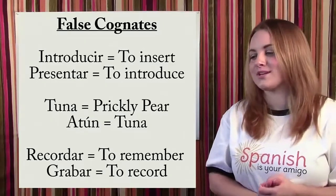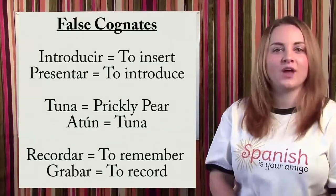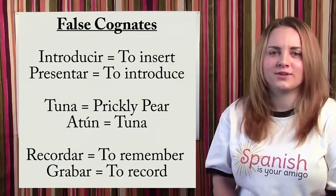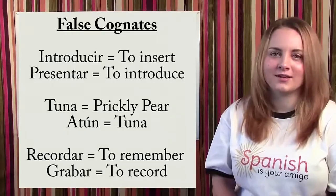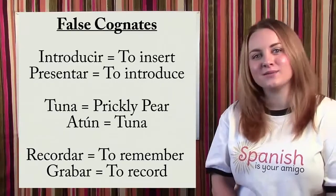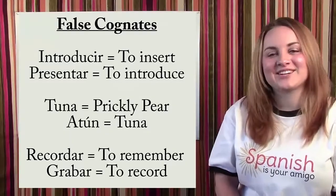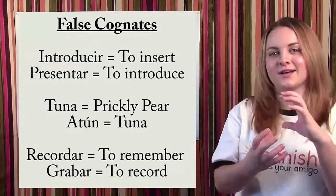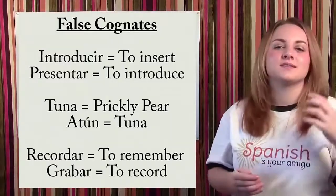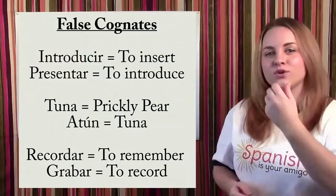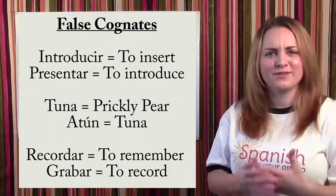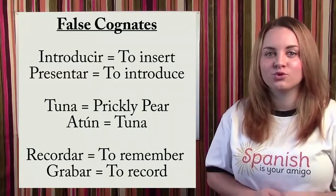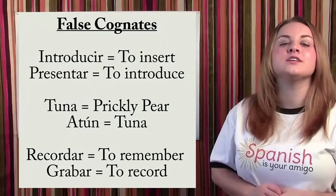Next word is tuna. It looks like it should be tuna, like tuna fish out of a can, but it's not. This word actually means prickly pear — it's like a little cactus. But what is the word for tuna the fish? That word is atún, with an accent mark on the U.